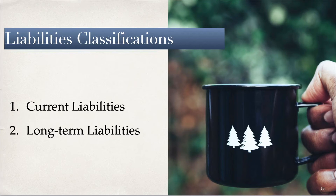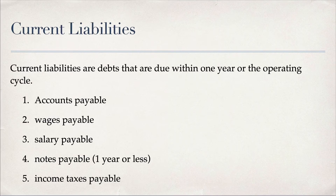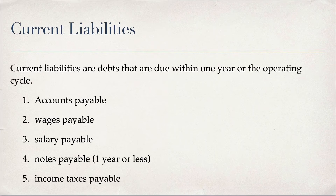Now let's switch to liabilities. We have two categories: current liabilities and long-term liabilities. Current liabilities are debts due within one year or the operating cycle, whichever is longer. If your operating cycle is 15 months, anything due within those 15 months is a current liability. Examples include accounts payable, wages payable, salary payable, notes payable due within one year, and income tax payable.